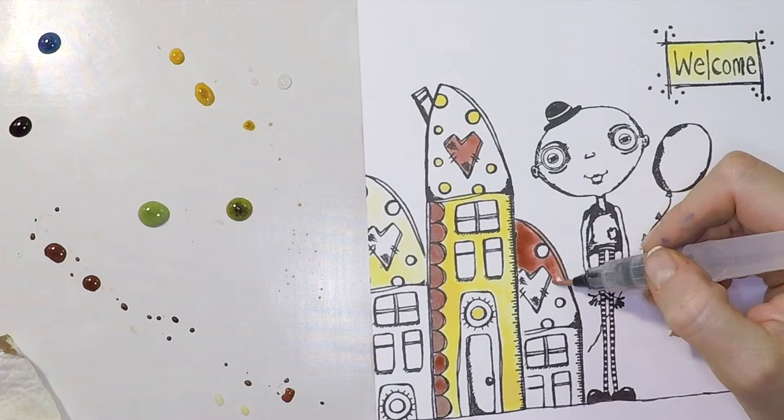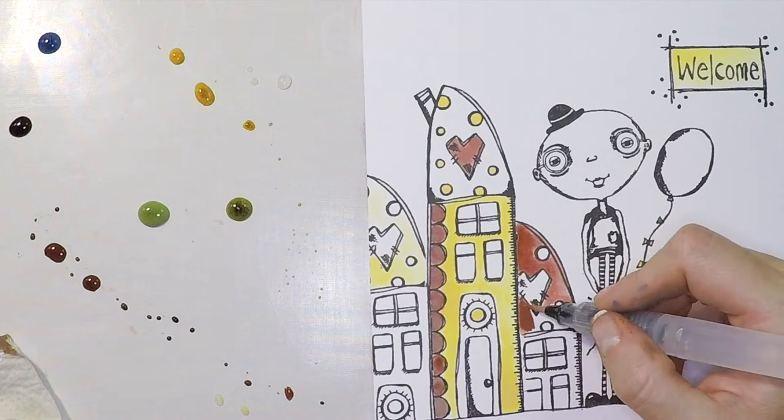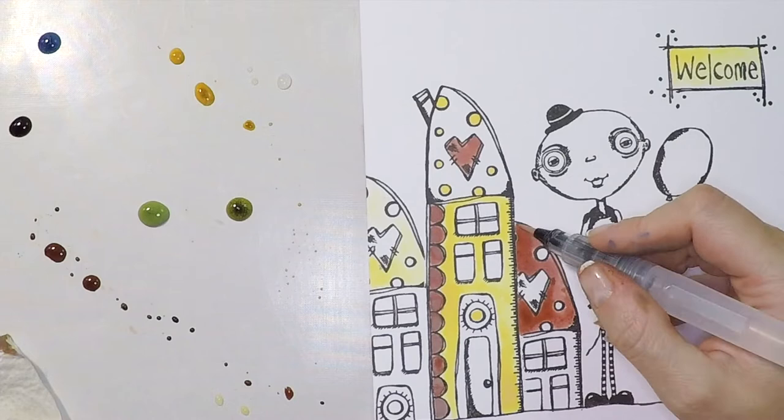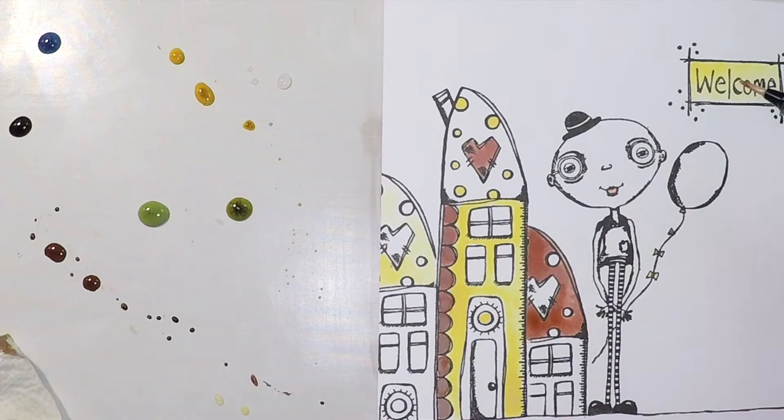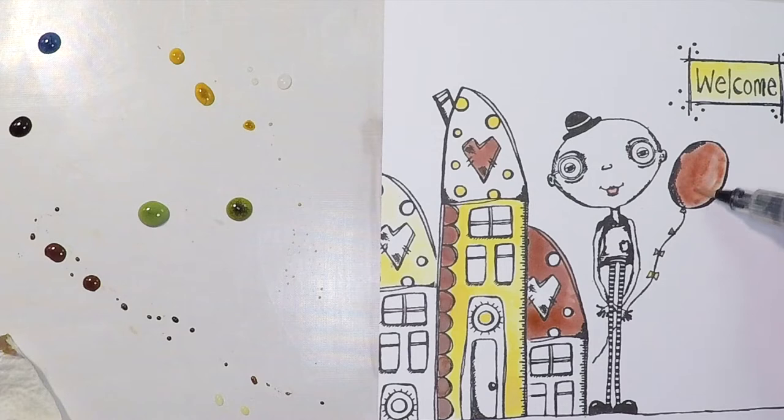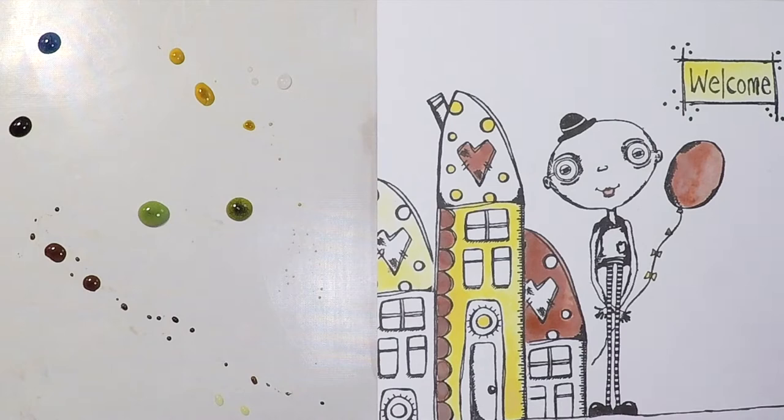How do you like to color your images? For me, it makes kind of sense to paint all the colors that are the same color at once. Just because then I can see if it's balanced or not. Or if I want to add it here and there. And then I basically just need to clean my brush once. But of course you could start just with the first house and then move to the next one. But I like to do it this way.